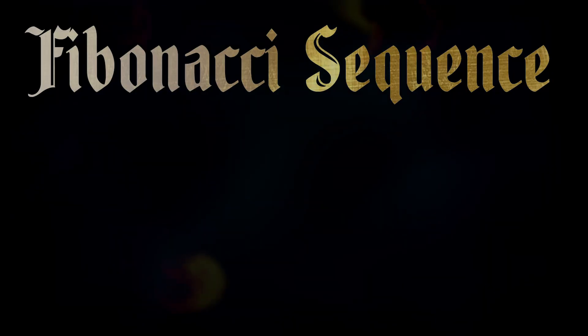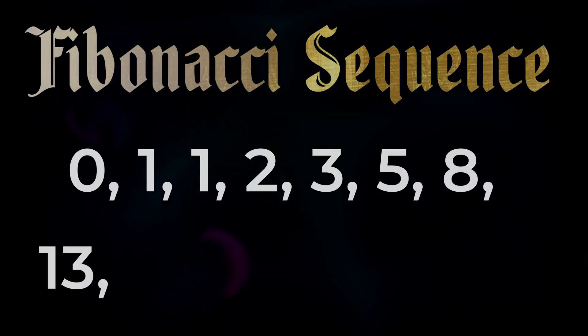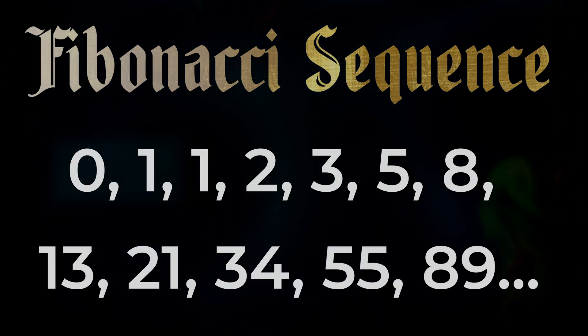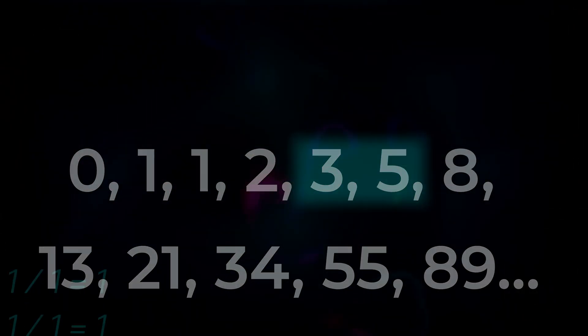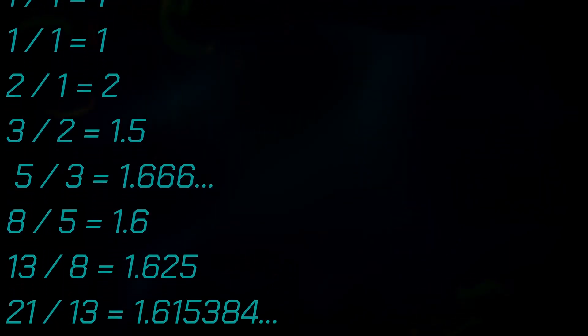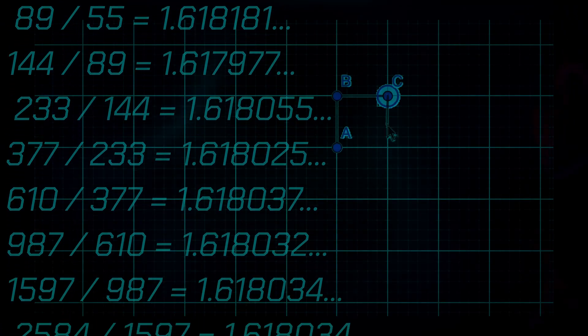This leads us to the Fibonacci sequence — think of it like nature's code. It appears everywhere, and we'll see how in just a moment. It's a series of numbers: 0, 1, 1, 2, 1, 5 — each new number in the sequence is found by adding the two numbers that came just before it. The higher we go in the sequence, dividing each number by the last, the closer we get to phi.